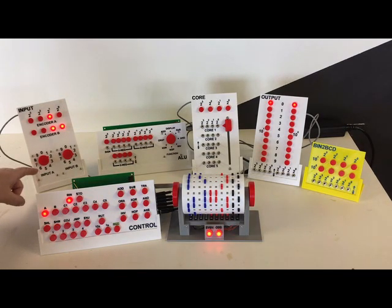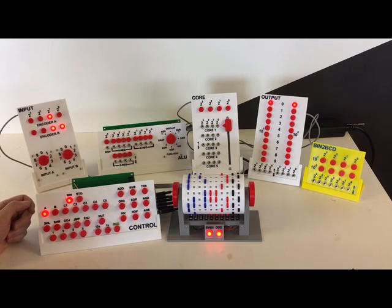You'll notice that as I select the digit with these rotating switches, the corresponding binary for those digits shows up here in the encoder A and encoder B lights. So now we want to go and execute the first instruction. So we come down here to the control unit.